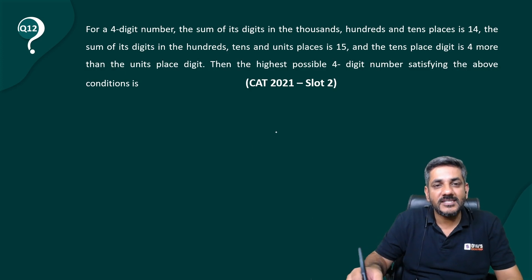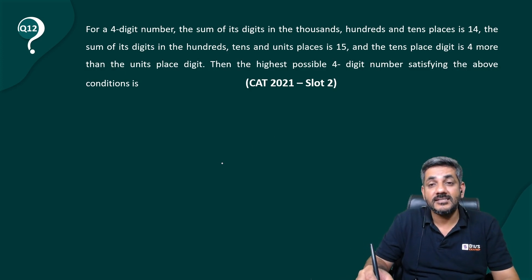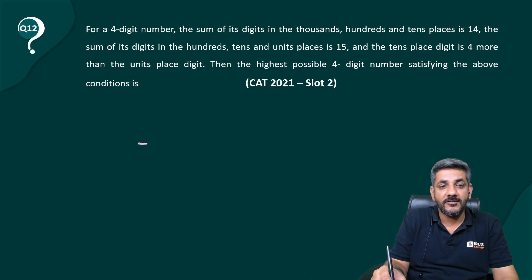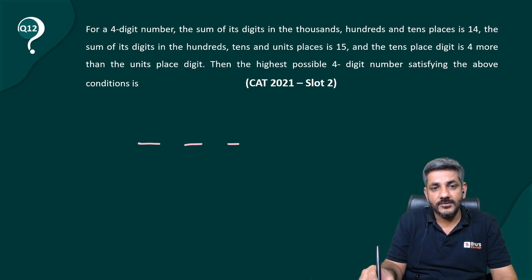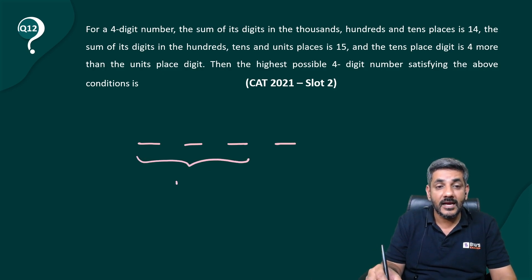For a four-digit number, the sum of its digits in the thousands, hundreds and tens place is 14. Let me make a four-digit number. One, two, three and four. The sum of the digits in thousands, hundreds and tens place, that means these three, they add up to 14.